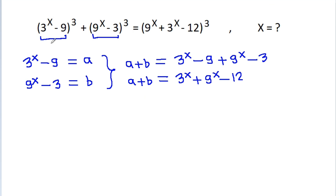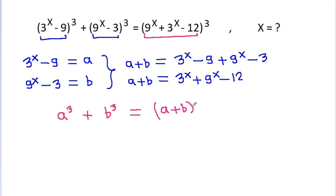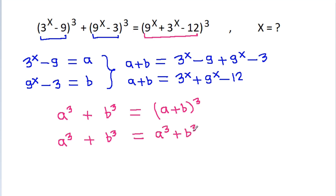So this equation will become a cubed plus b cubed is equal to a plus b cubed. And we know that a plus b cubed equals a cubed plus b cubed plus 3ab times a plus b.